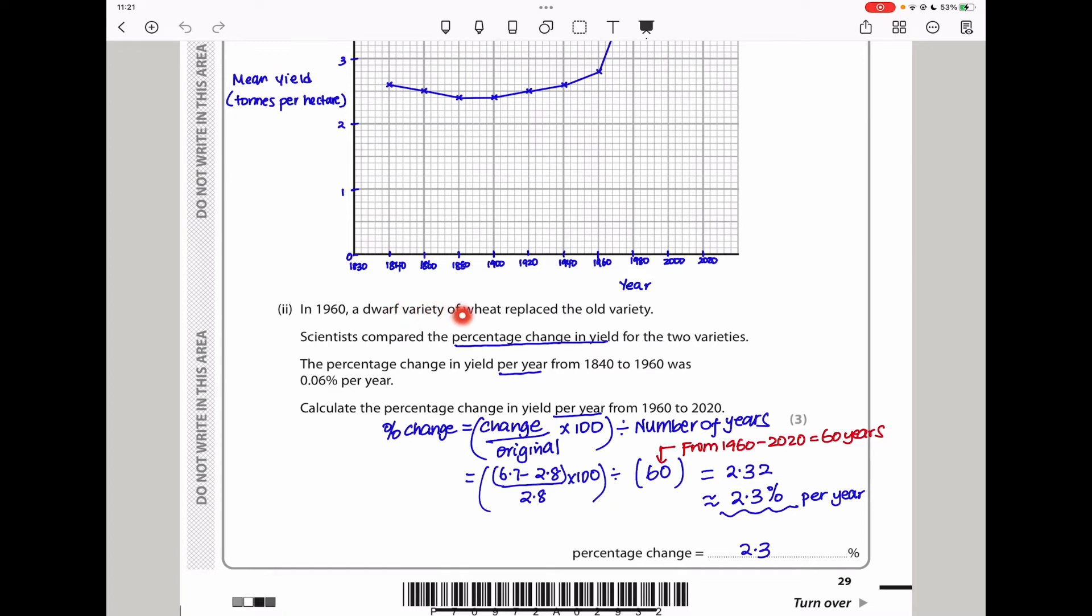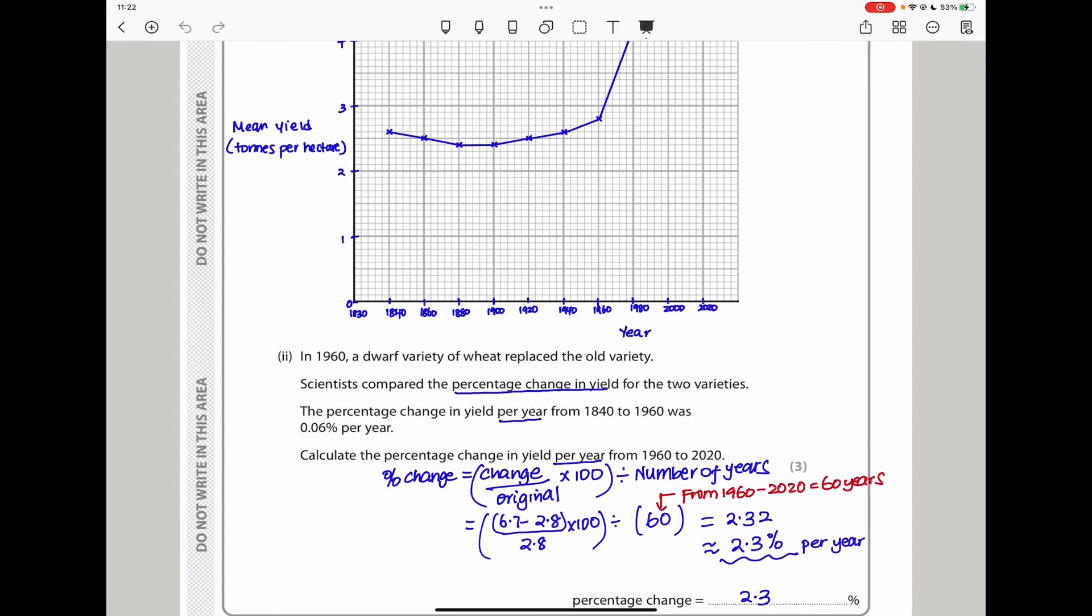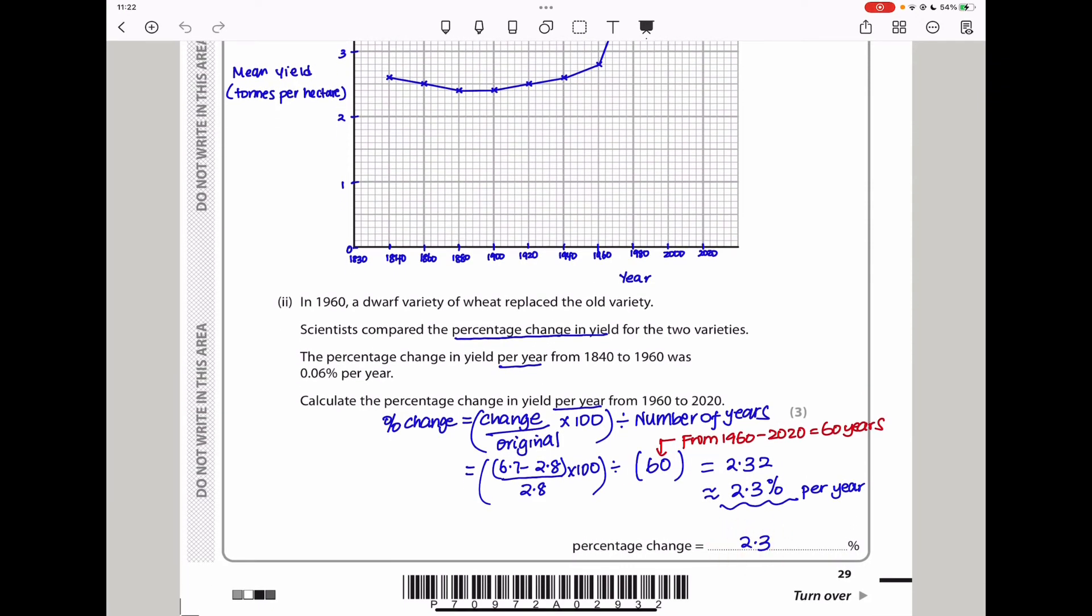Next they say, in 1960, a dwarf variety of wheat replaced the old variety. Scientists compare the percentage change in yield for the two varieties. The percentage change in yield per year from 1840 to 1960 was 0.06 per year. Here, they want us to calculate the percentage change in yield per year from 1960 to 2020. To do this, we need to know that percentage change should be the change divided by the original times 100. And the change that has occurred from the table is 6.7 minus 2.8. Originally, in that year it was 2.8. And in the final year it was 6.7. So we subtract it and then divide by that, the way it was in 1960, multiply by 100. Here we want to find percentage change in yield per year. So we have to divide through by the number of years. They were 60 years. And finally, we got the answer is 2.3%.